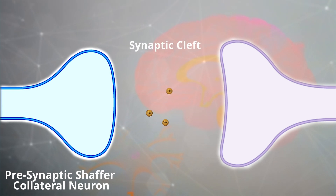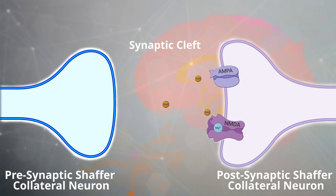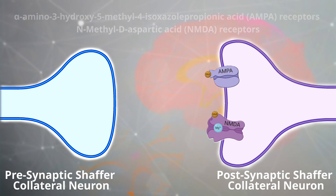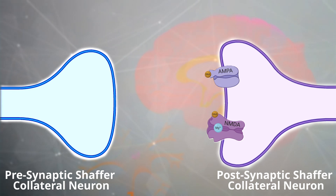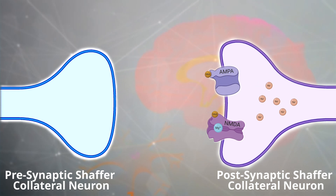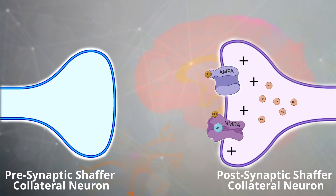Glutamate at the synaptic cleft will bind to glutamatergic receptors on the post-synaptic neurons of the CA1 pyramidal cells. These receptors are called AMPA and NMDA. When glutamate binds to the AMPA receptors on the post-synaptic neuron, this will open up the channel to allow sodium ions to flow inside the cell, causing a positive change in membrane potential leading to depolarization.